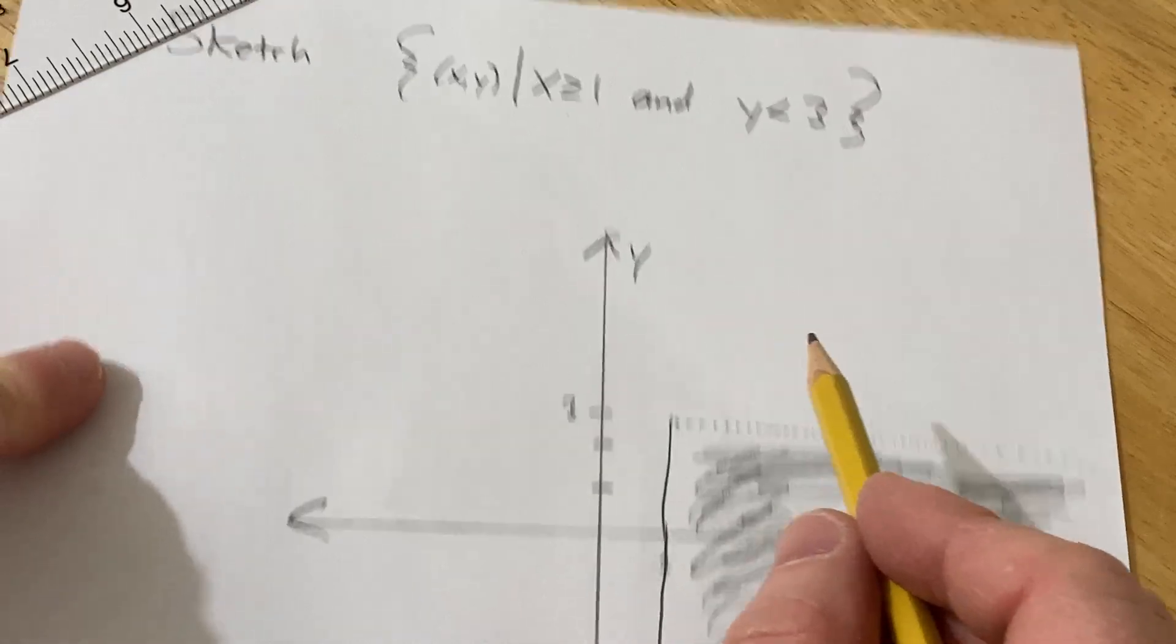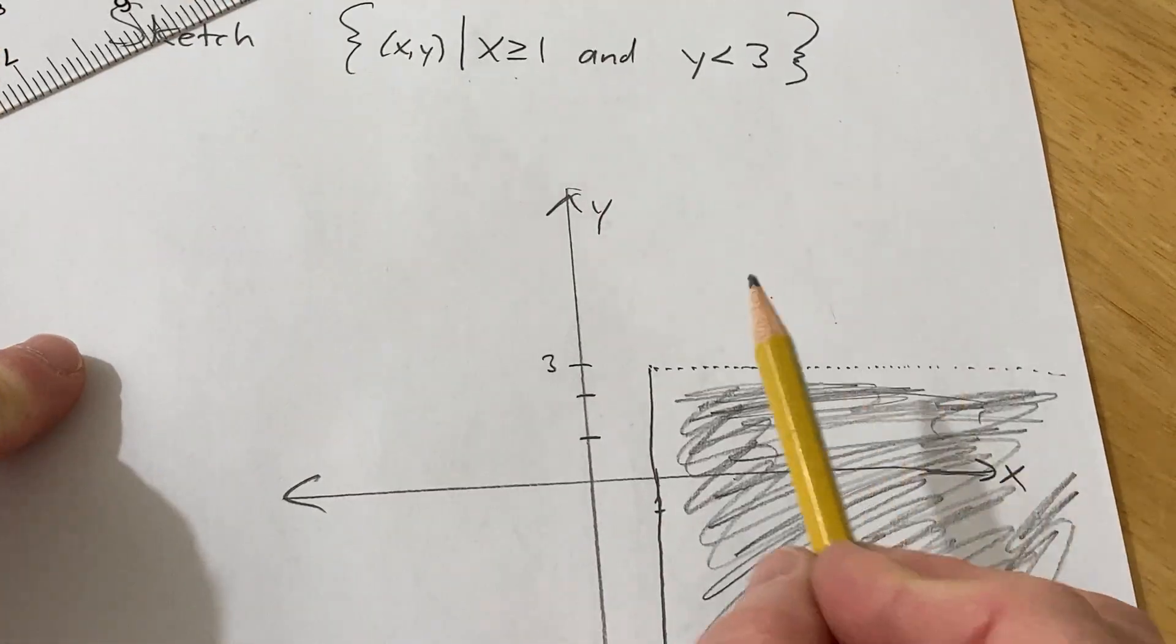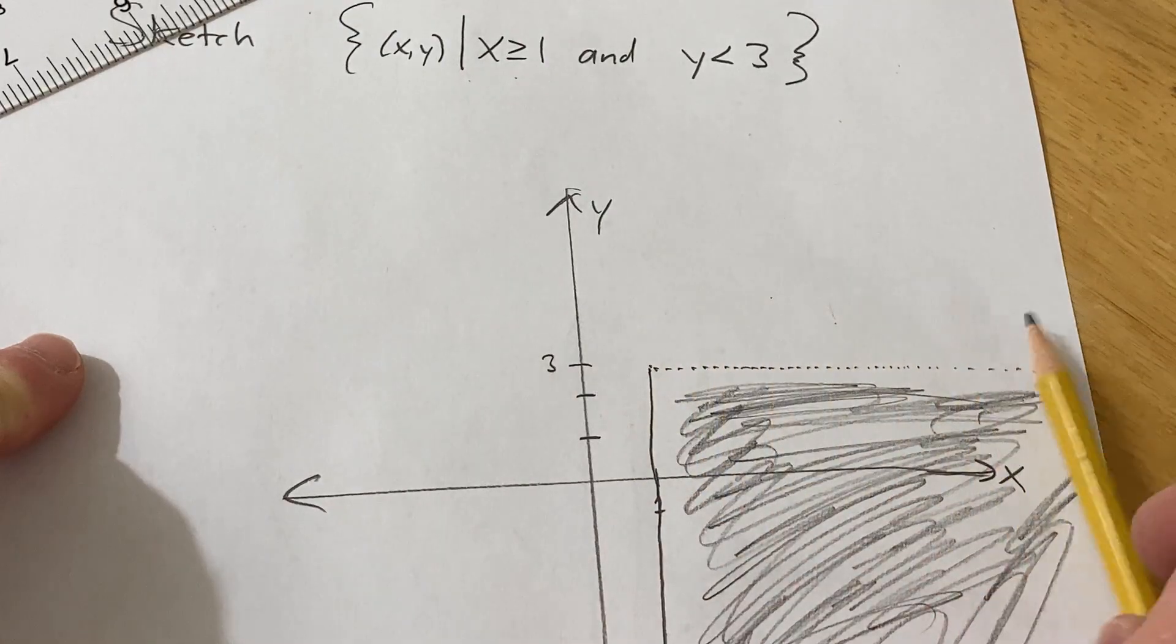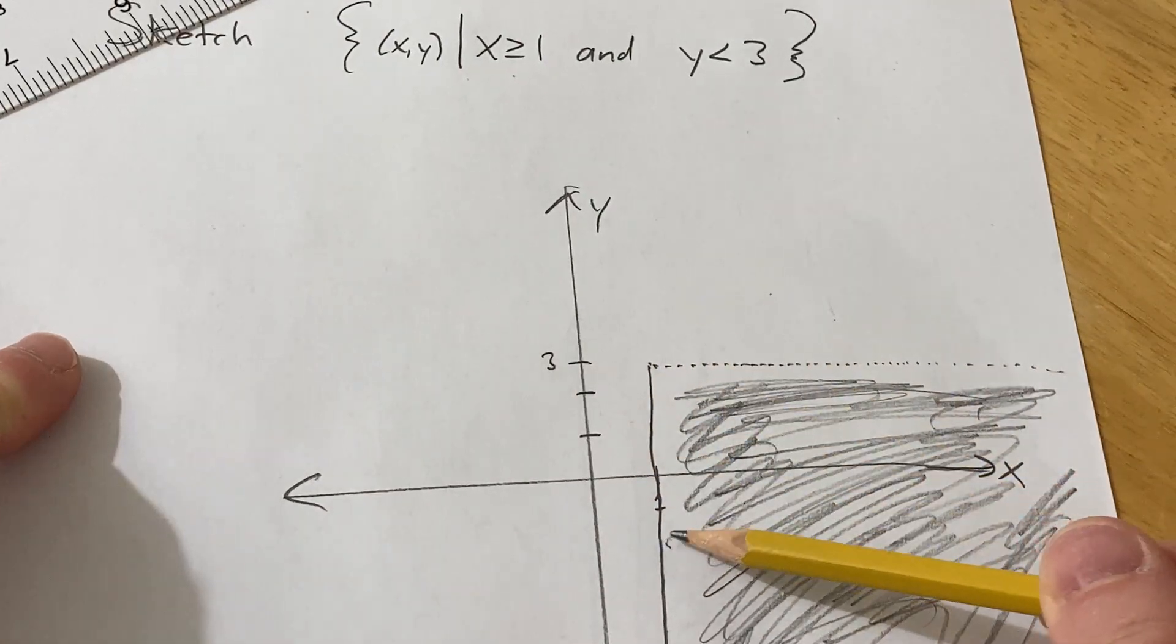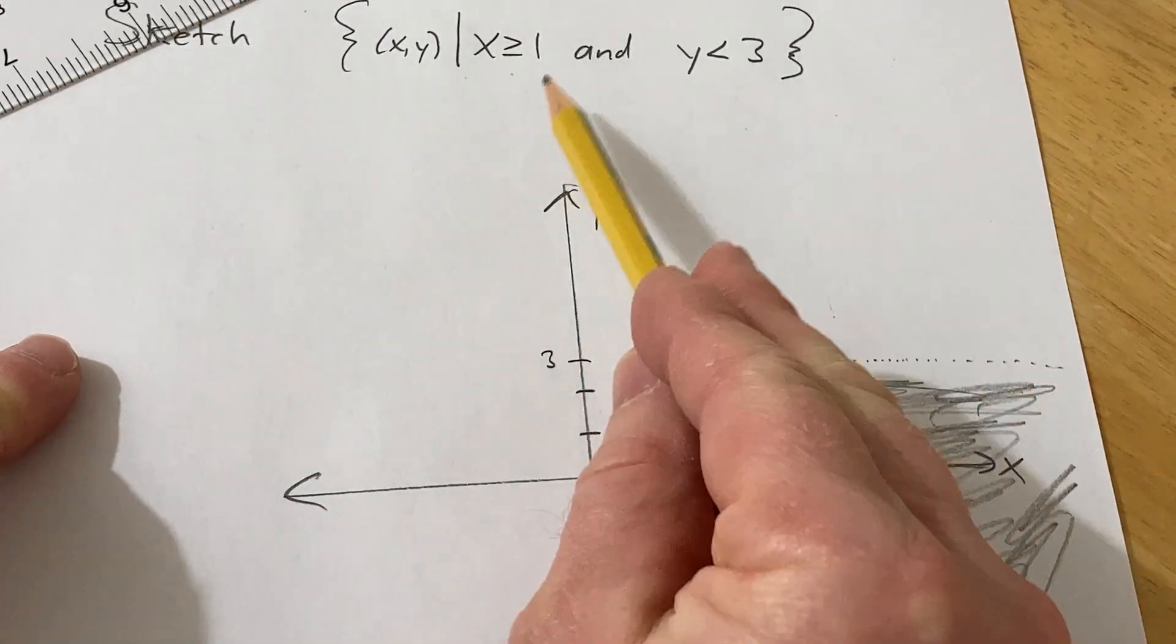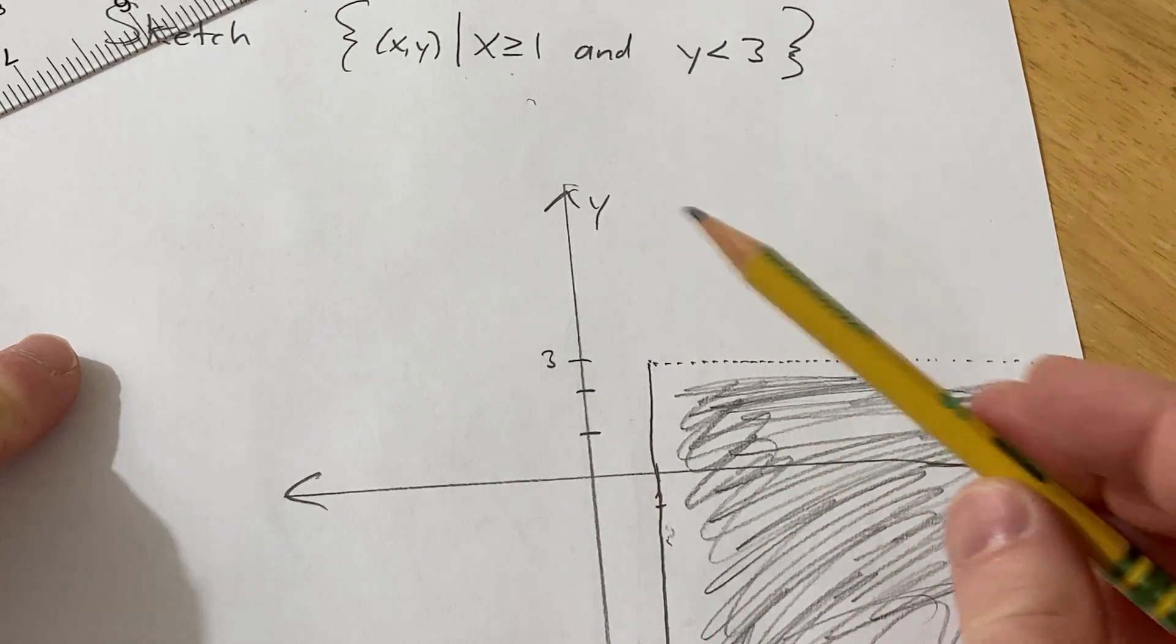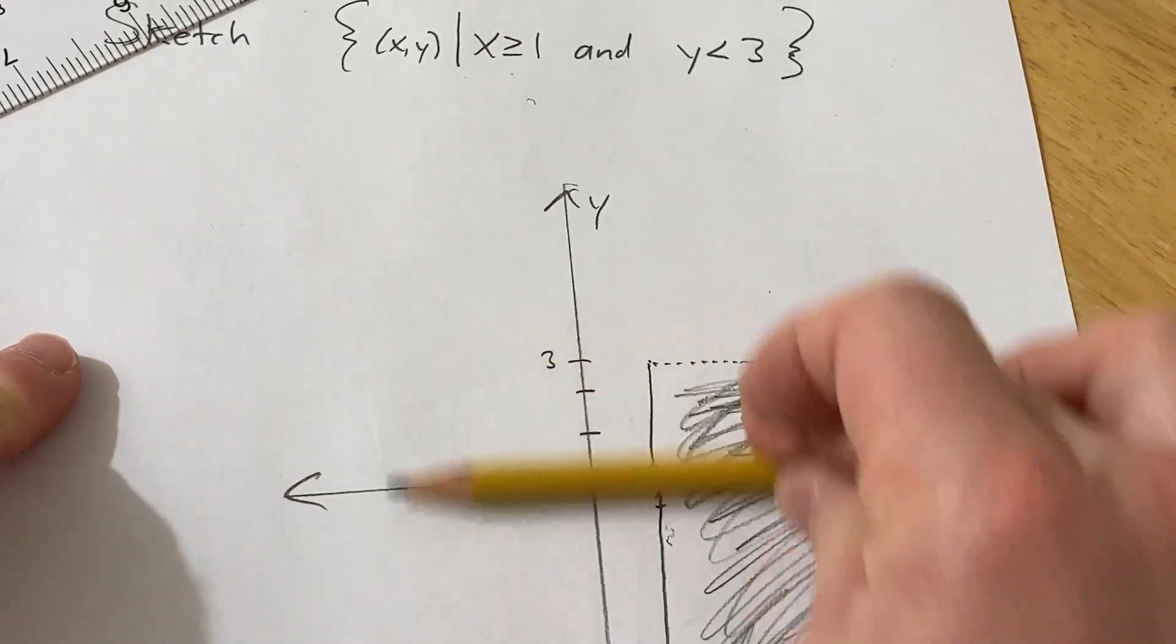So basically, x has to be greater than or equal to 1, so that guarantees it's going to be over here. Notice it's a solid line because it allows for equality of x equals 1. And then y less than 3 means all of the y-coordinates have to be down here.